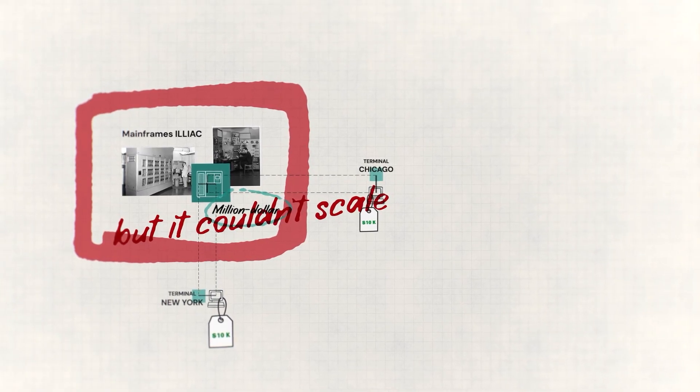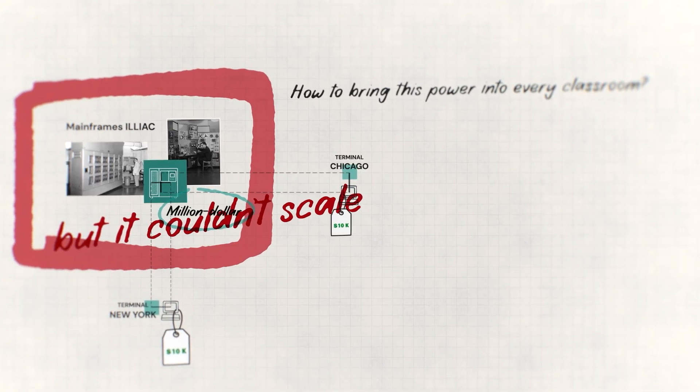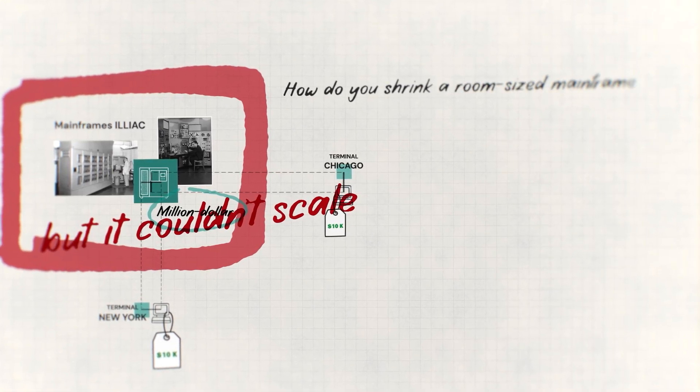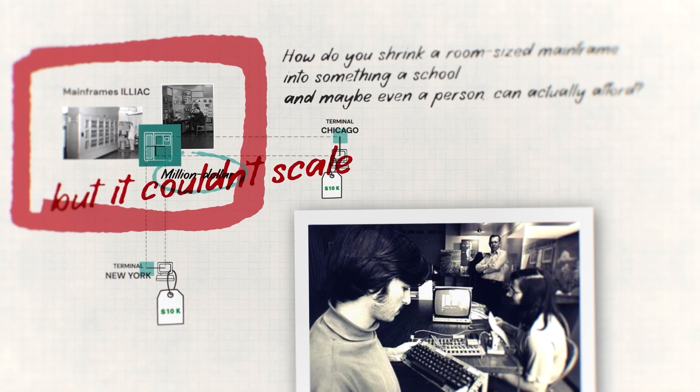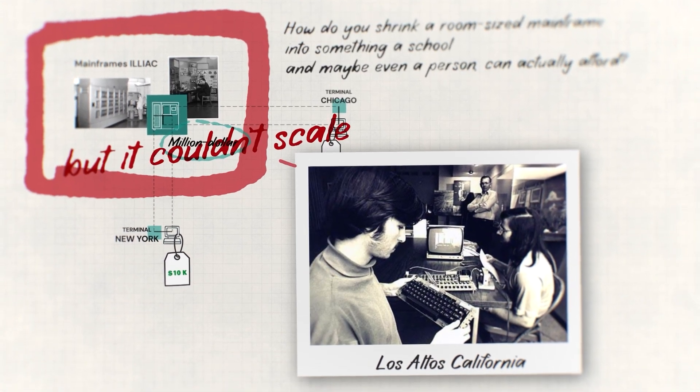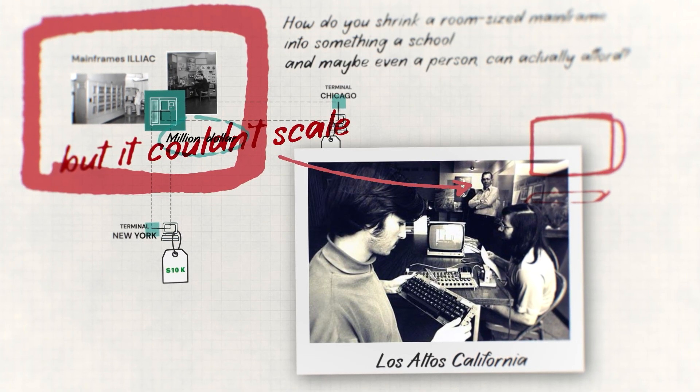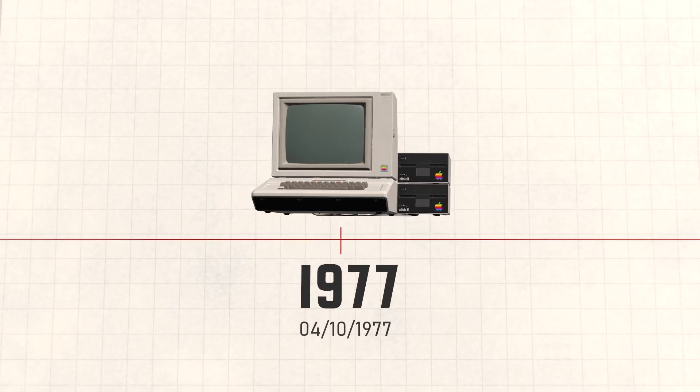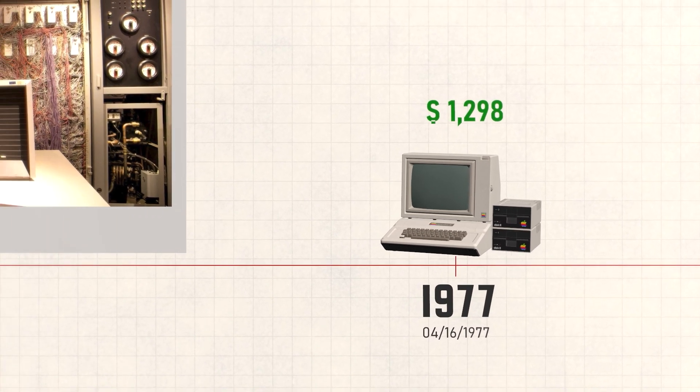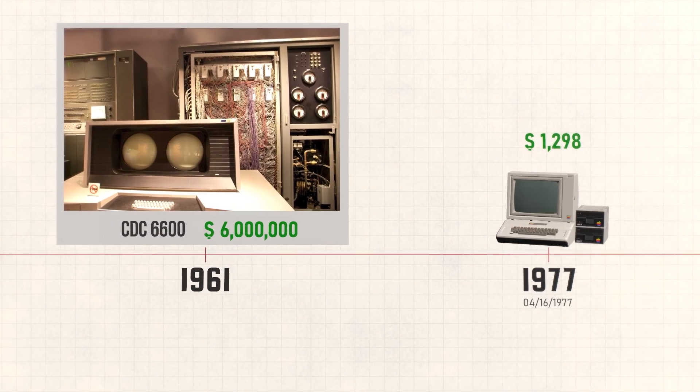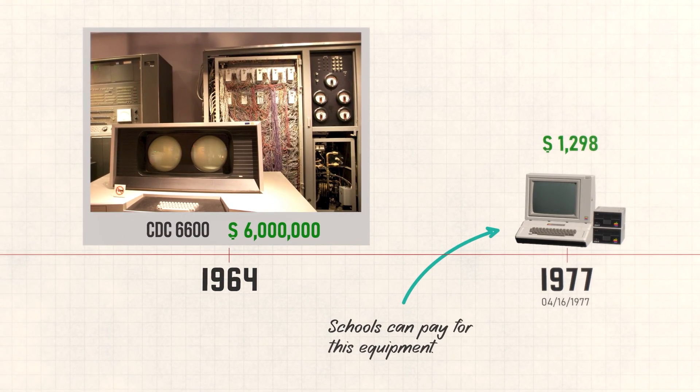So the technology that could completely save education was trapped in university computer labs. So solving the literacy crisis meant getting this power into every classroom. So the question becomes, how do you shrink a room-sized mainframe into something a school, and maybe even a person, can actually afford? So somewhere in Los Altos, California, in a random garage, two guys named Steve are about to accidentally answer that question. The year is 1977, and the Apple II launches at a whopping $1,300 price tag. But believe it or not, it's a computer that schools can actually afford.